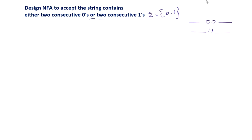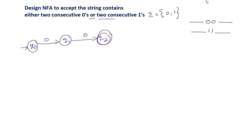Since the string can have '00' or '11' as a substring, there are two paths to reach the final state. Starting with q0: on 0, it reaches q1; q1 on 0 reaches q2, which is the final state. Before and after q2, any zeros and ones are allowed. For the second condition, q0 on 1 reaches q3, and q3 on 1 reaches q2, achieving two consecutive ones.